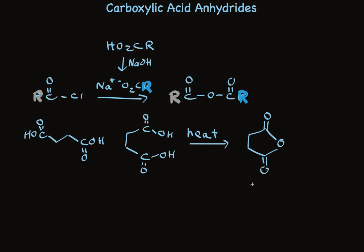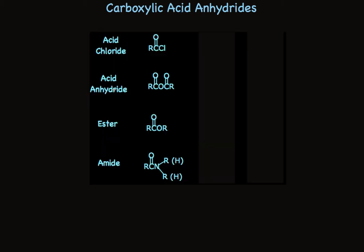However, generally, we'll make anhydrides by treating an acid chloride with a carboxylate salt. Turning to the chemical reactivity of these compounds, let's look at the list of carboxylic acid derivatives. Anhydrides are more stable and less reactive than acid chlorides, but less stable and more reactive than esters or amides.